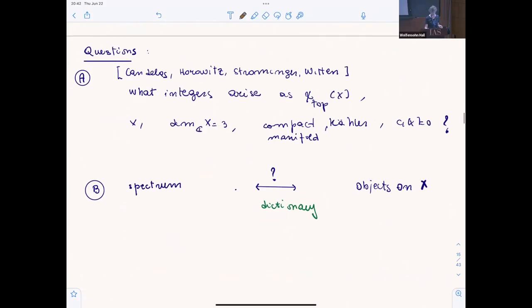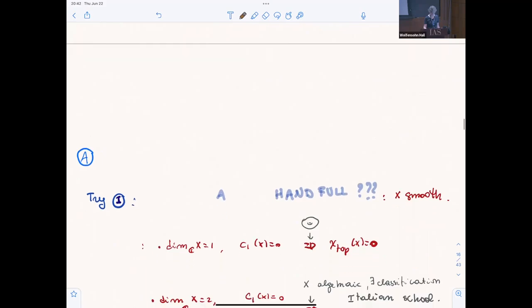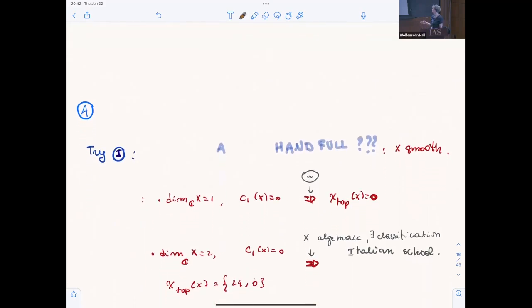In a paper, the question the physicists posed is: which integers can appear as the topological Euler characteristic of Calabi-Yau? This is related to the question of the spectrum, which I'm going to talk about later. Topological Euler is one of the objects that appears in the spectrum. They hoped there were a handful. From an algebraic geometer's perspective, one could think this is not so unrealistic, because if we look at surfaces, Riemann surfaces with trivial canonical, there is only one in dimension two.